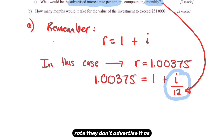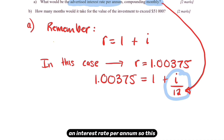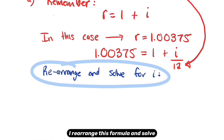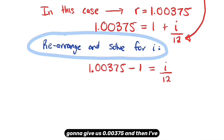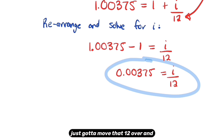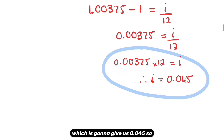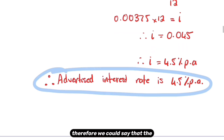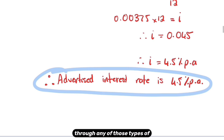When a bank advertises an interest rate, they don't advertise it as compounding weekly or monthly — they advertise it as an interest rate per annum. So this I value is divided by 12. Rearranging and solving for I: move the one over first, giving 0.00375, then multiply by 12 to get 0.045. Changing that to a percentage gives 4.5%. Therefore the advertised interest rate is 4.5% per annum. That's a bit of a curveball not covered in the explanation videos, but worth noting.